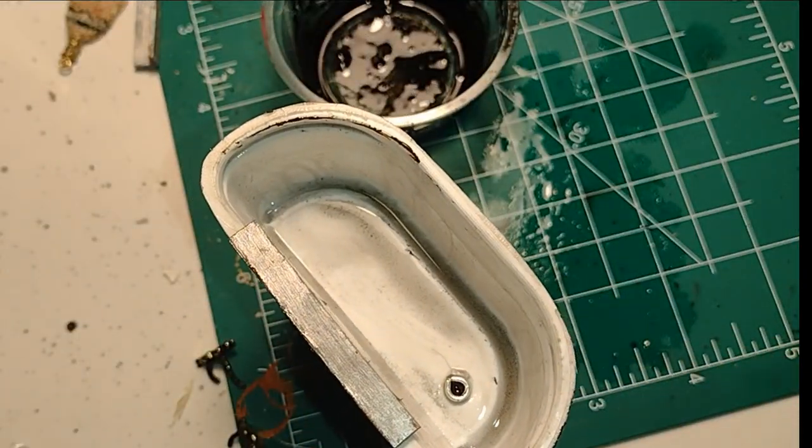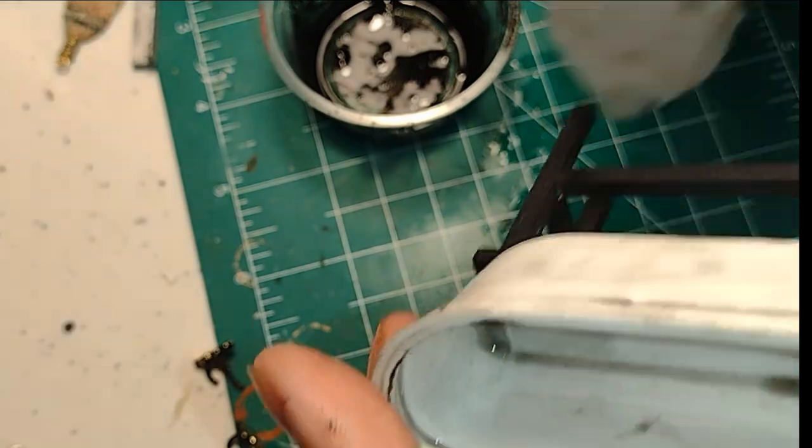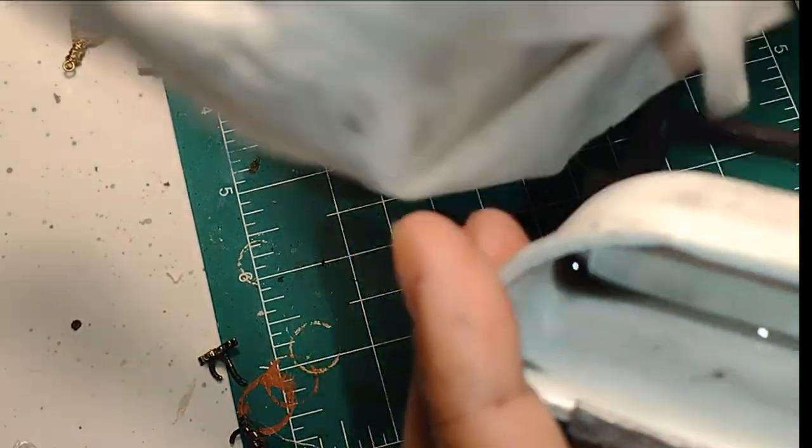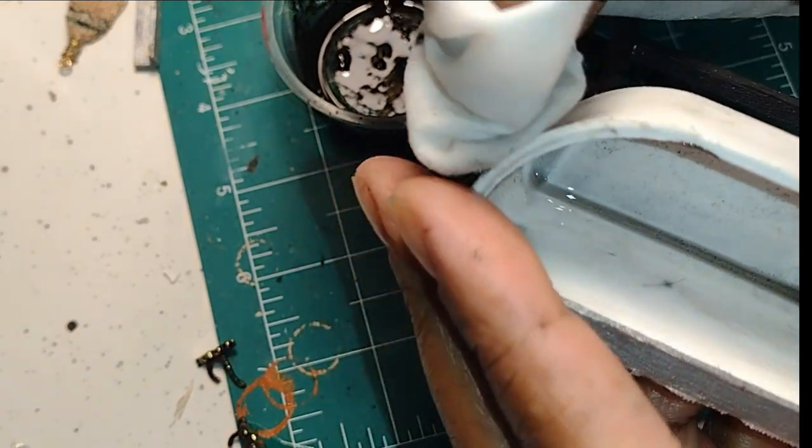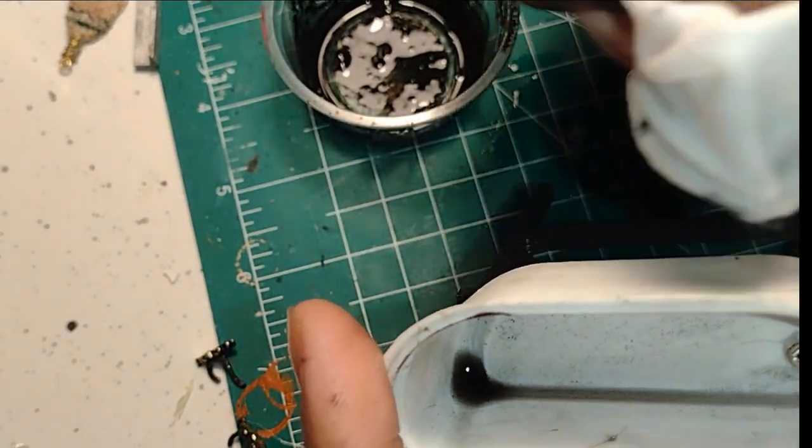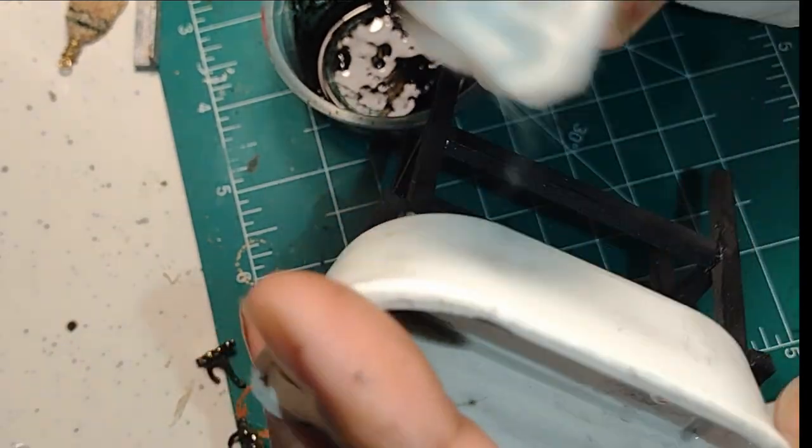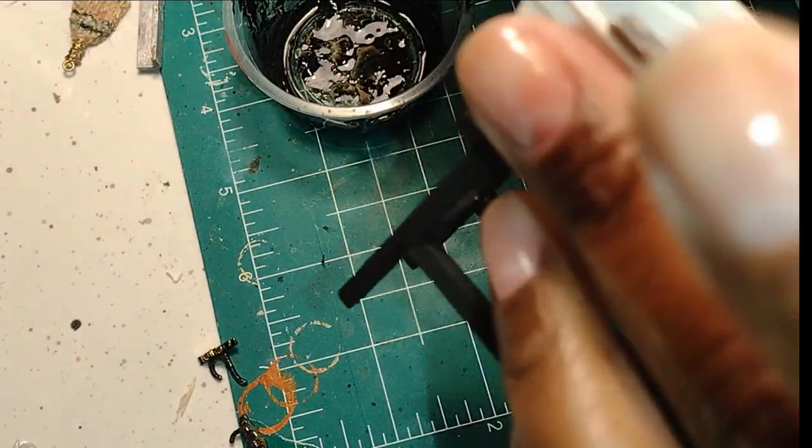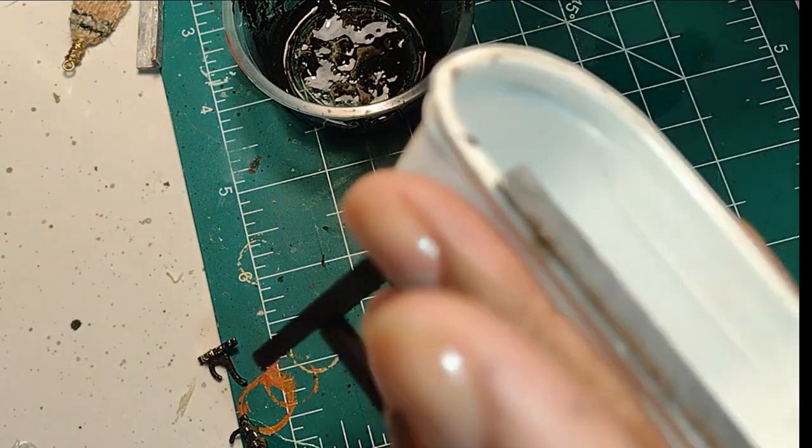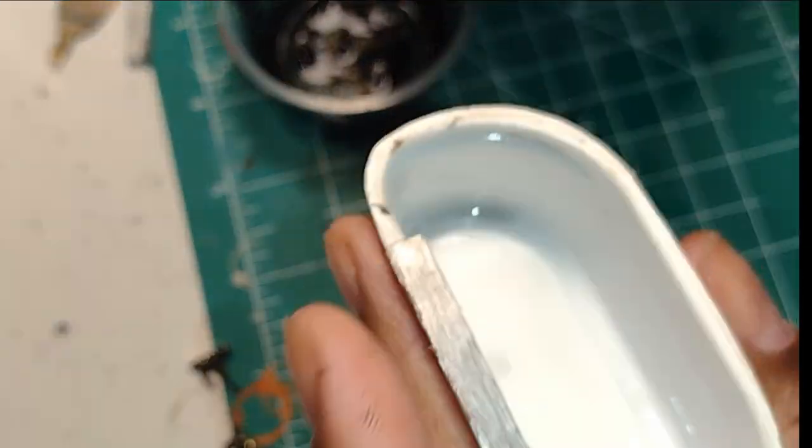Before that dries, I do want to dab some of that out because I don't want it to leave a ring at the bottom of the tub. I want it to be stained but not a solid ring. I'm just dabbing it out around the outside and dabbing it a little bit on the inside to keep it from building up too heavy.